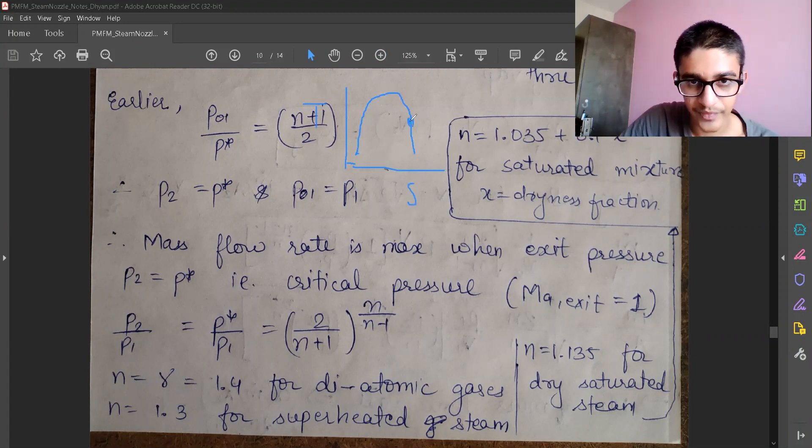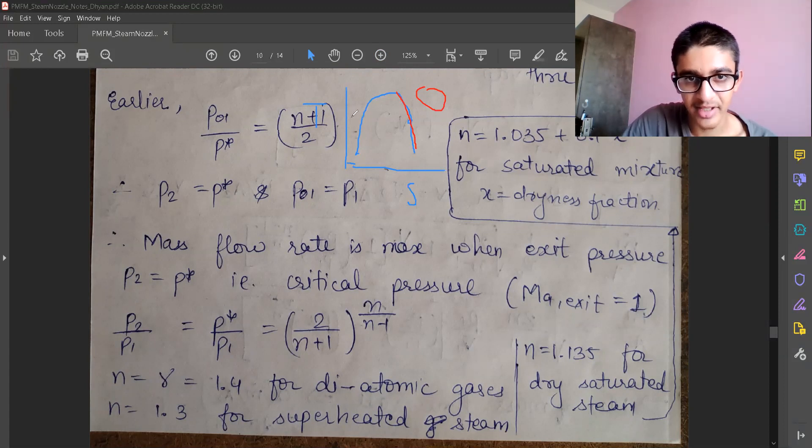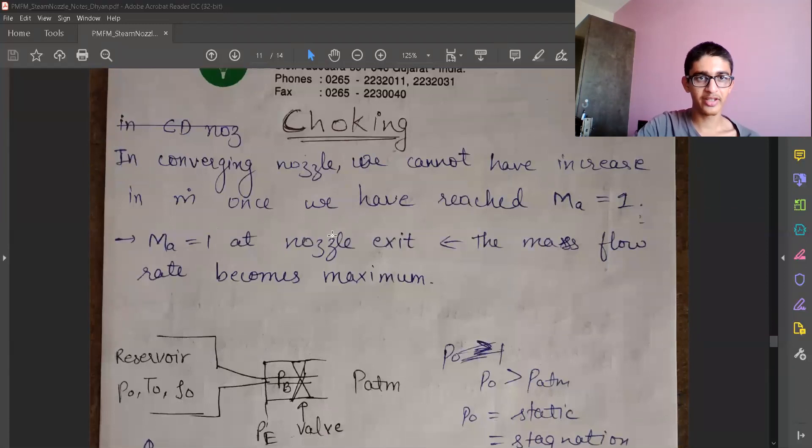This is the curve for dry saturated steam. Here is the superheated steam, and one more relation is given: N equals 1.035 plus 0.1X for saturated mixture, where X is the dryness factor. So this relation is for the region inside the dome and X is the dryness factor—that is the quality of the mixture. Now we will see choking in the next video. Thank you.